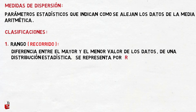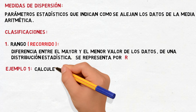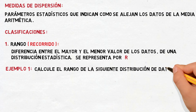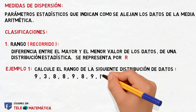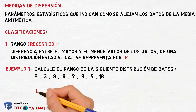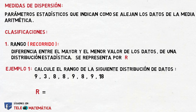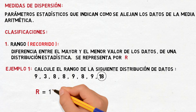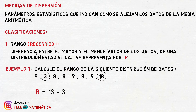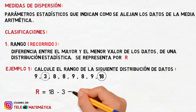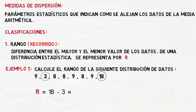Let's see an activity: calculate the range of the following distribution of data — 9, 3, 8, 8, 9, 8, 9, and 18 respectively. According to the definition, the range is calculated as the difference between the greater value, which is 18, and the lower value, which is 3. Solving this operation: 18 minus 3 is equal to 15, and this would be the range of the distribution data. Very simple.